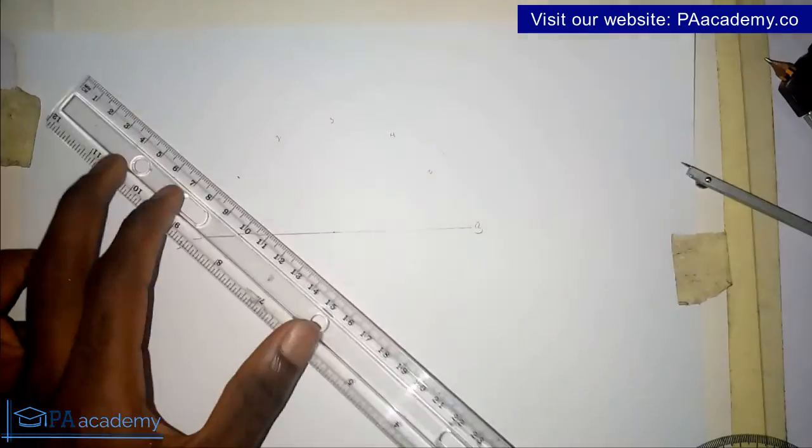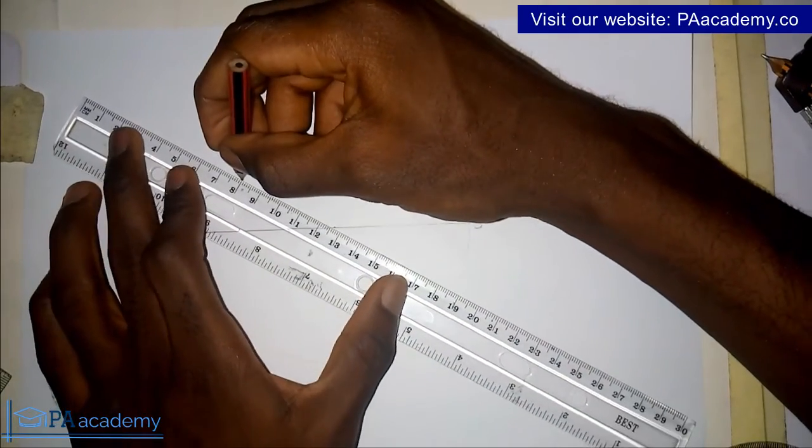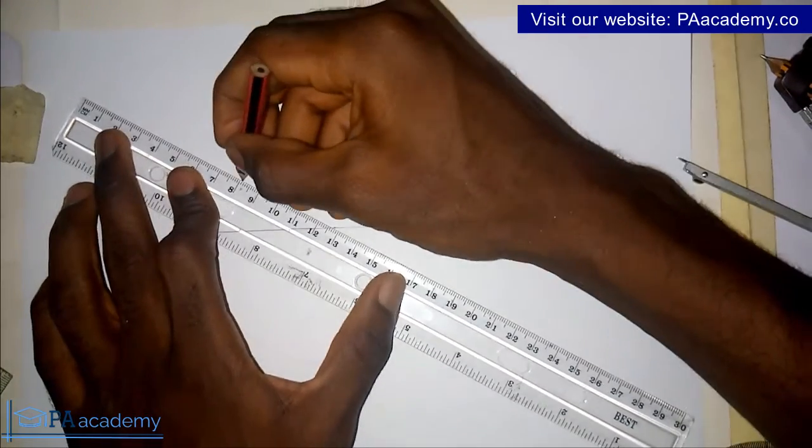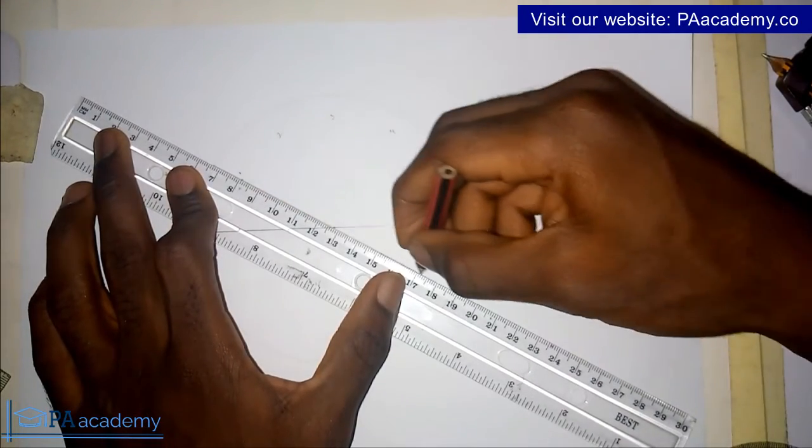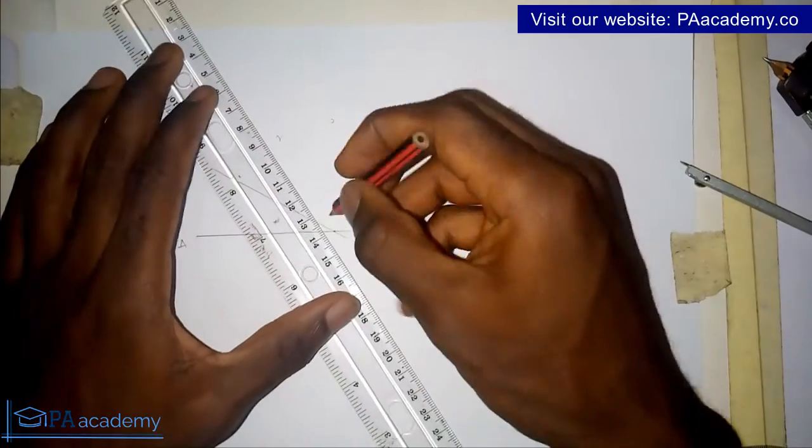So the next thing is very simple. Just pick your ruler. You draw a line from those points to pass through the center of the circle. Like this. So you go to the next point.